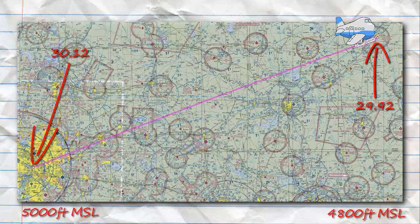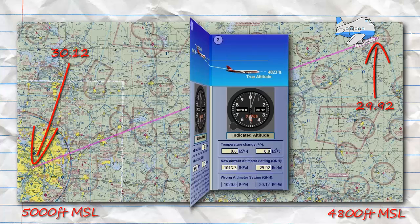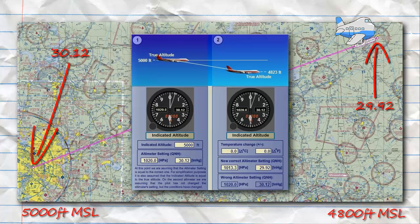But our indicated altitude is going to remain at 5,000 feet, which is where we get the high to low look out below. We came from an area of higher pressure to an area of lower pressure without correcting for it, and now we are flying lower than what is indicated on our altimeter. So we need to be looking out below.